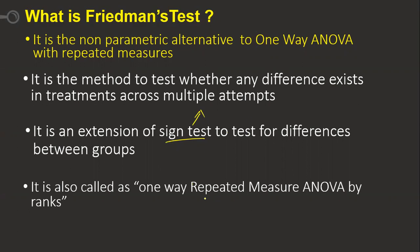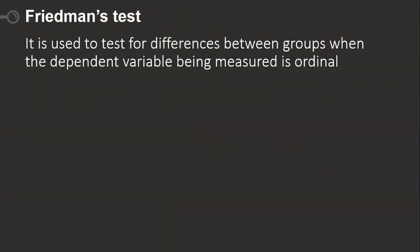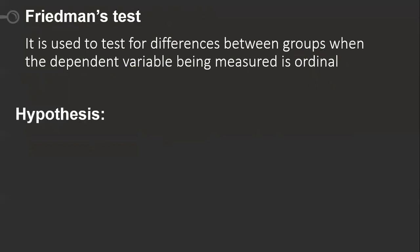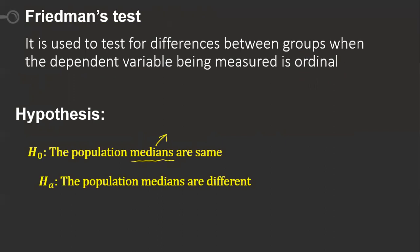It is also called one-way repeated measures ANOVA by ranks. It is used to test for differences between groups when the dependent variable being measured is ordinal. The null hypothesis is that the population medians are the same. We are comparing medians, not means here.